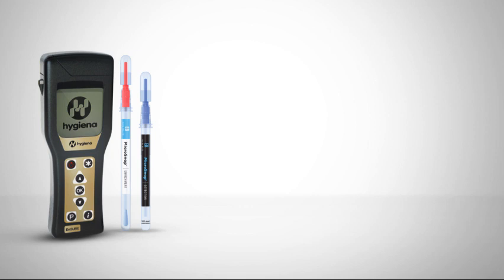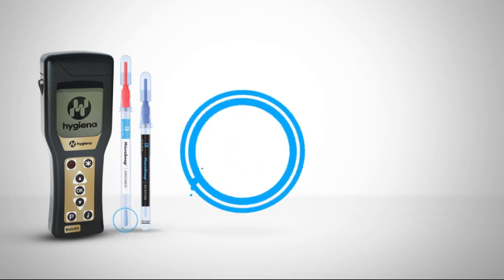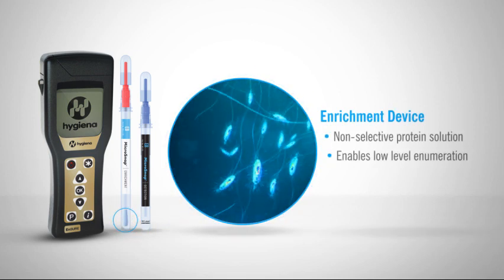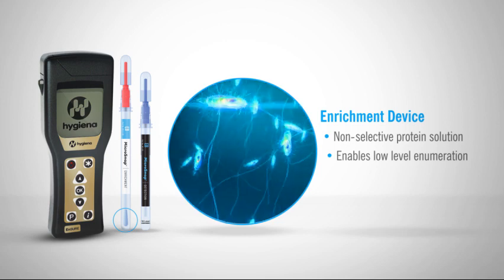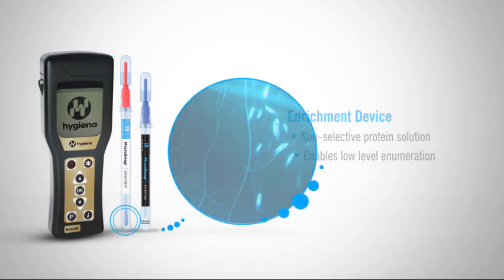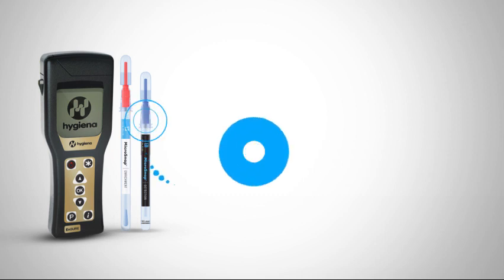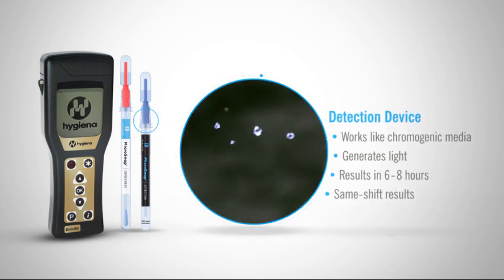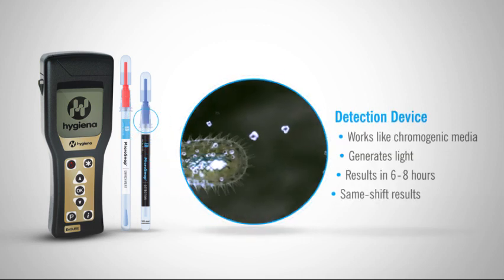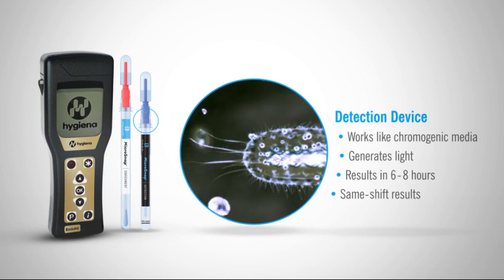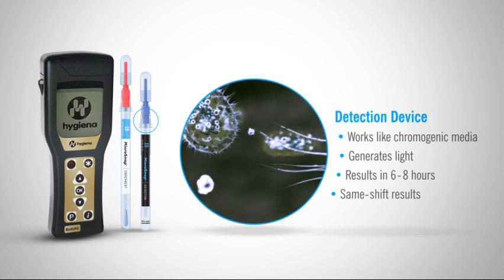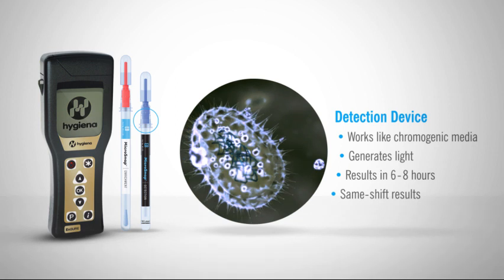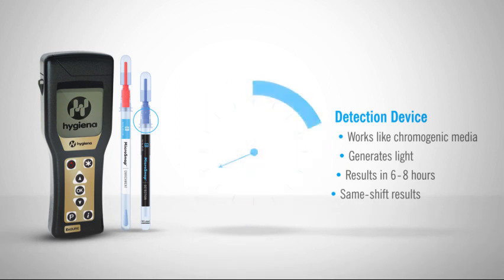Here are some important features about the product. The enrichment device contains proprietary growth media that enables low-level enumeration of EB bacteria. The detection device works just like chromogenic media, but instead of changing color, we illuminate the bacteria using a bioluminogenic test reaction. This reaction generates light when enzymes that are characteristic of EB react with specialized substrates.